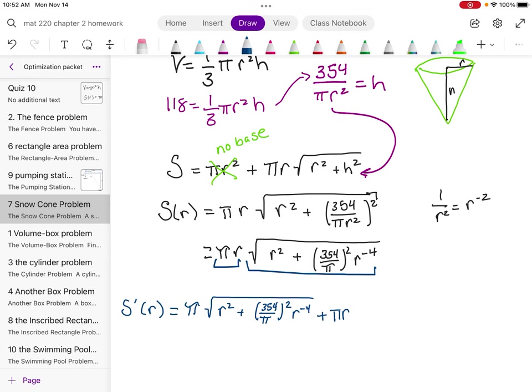And now the derivative of this square root term. Now I have a function underneath the square root. So I actually have a chain rule going on here. So the derivative of the square root, remember, we can think of a square root of a number as that value to the one half power.